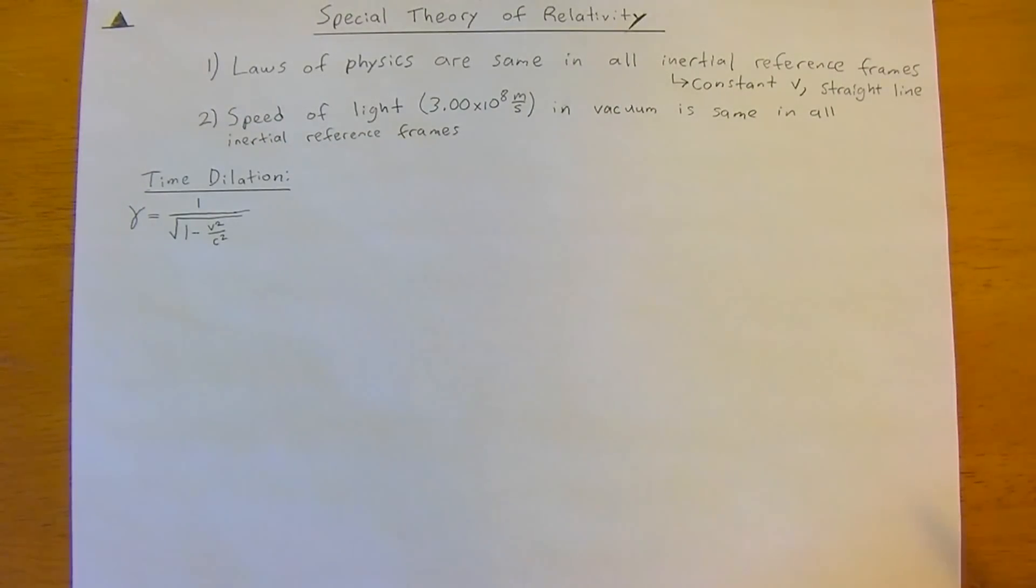And there's two things we reference time to. So the proper time, which is the time of the observer. So the person on the spaceship measuring their clock. And then there is the time, as viewed by an observer watching the spaceship travel. So say, from Earth looking at the spaceship.